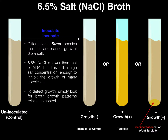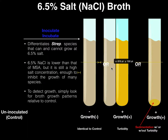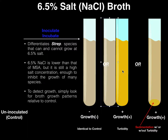If you pull out your broth and it's turbid, you take the uninoculated control and put it right next to it. If you can clearly tell the one on the right is darker — the broth is cloudy relative to the control — then you call it growth positive. That indicates bacteria did survive at 6.5% salt, and therefore it's growth positive. We can just put a plus sign for that.